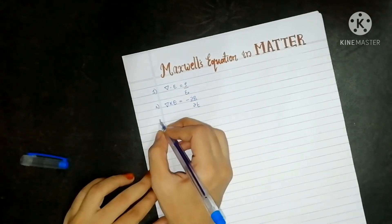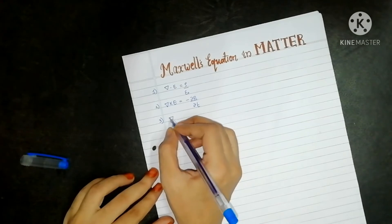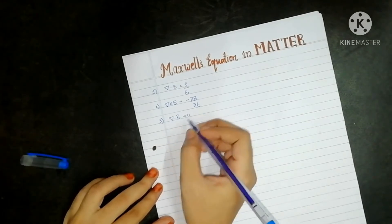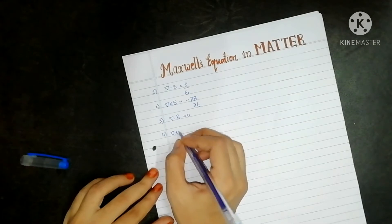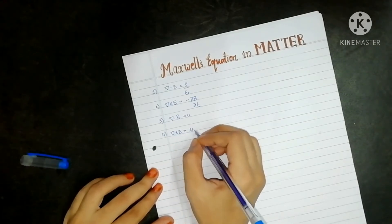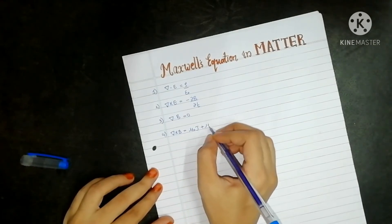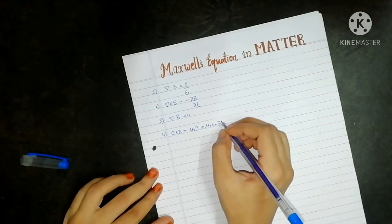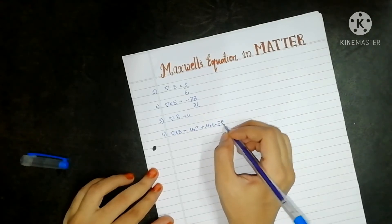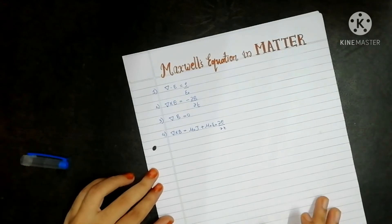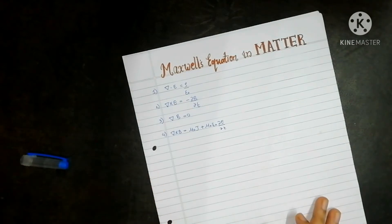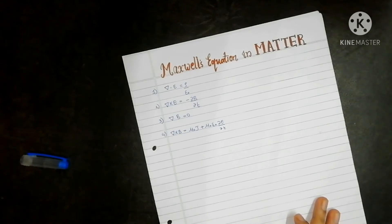The third equation is del dot B is equal to zero. The fourth equation is del cross B is equal to mu naught J plus mu naught epsilon naught dou E by dou t. Now, in material media, in addition to free charges and free current, we also get bound charges and bound current.